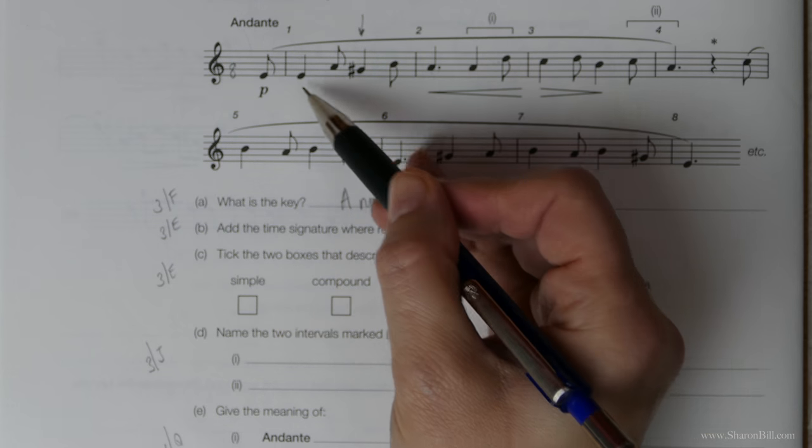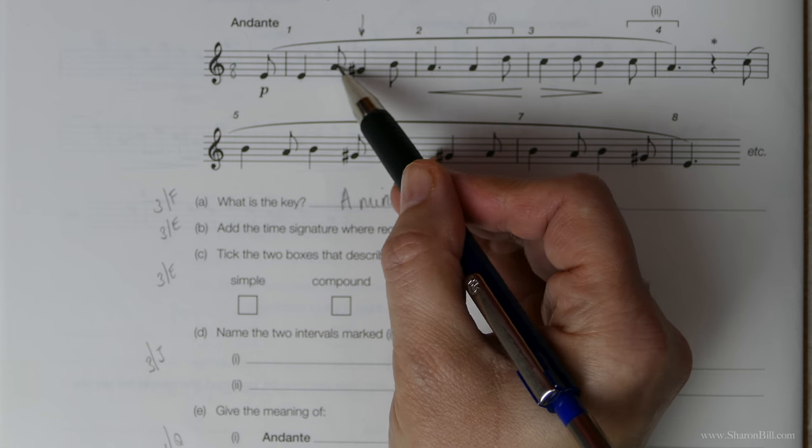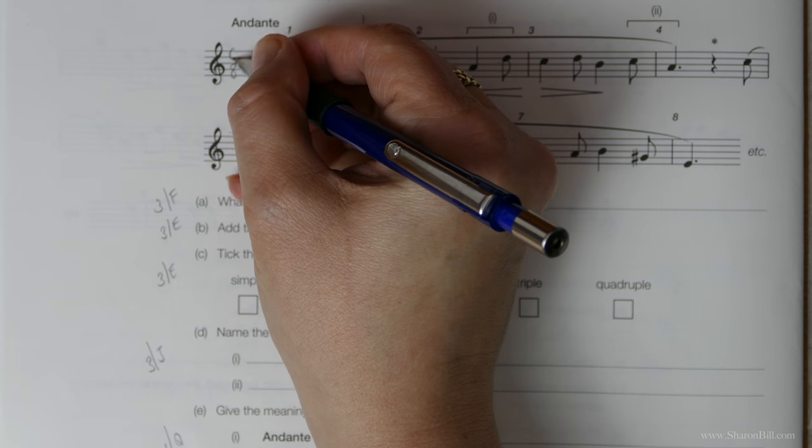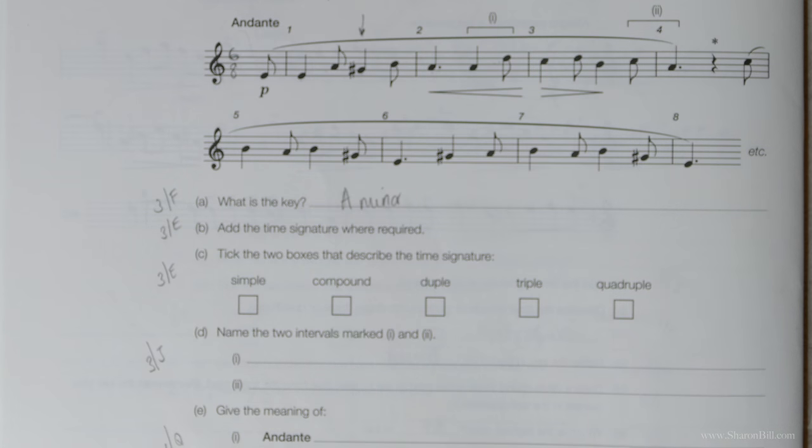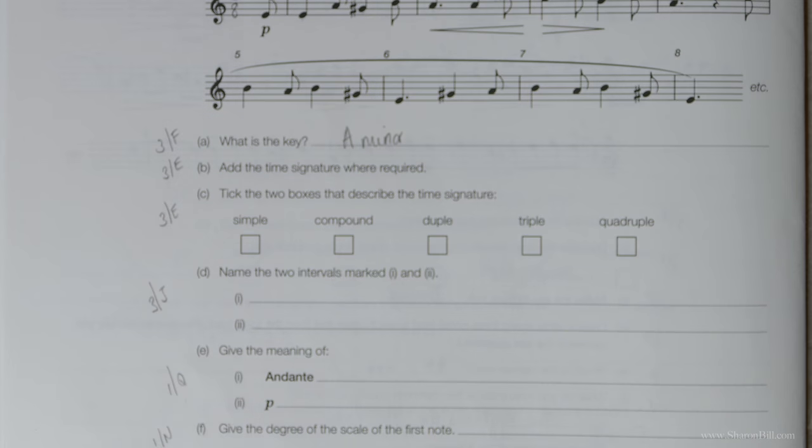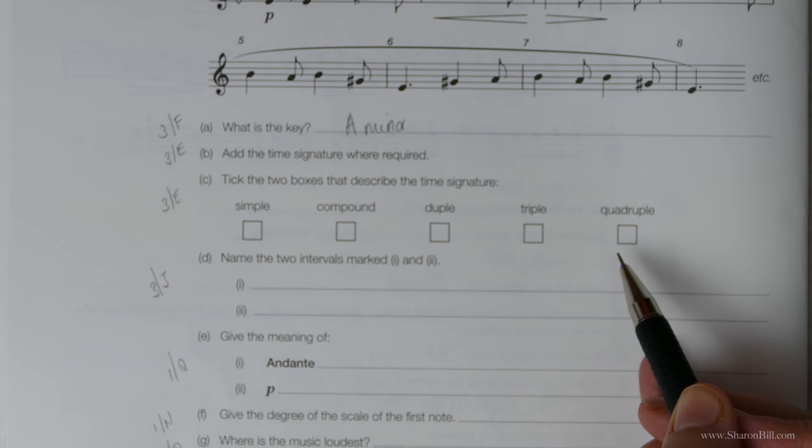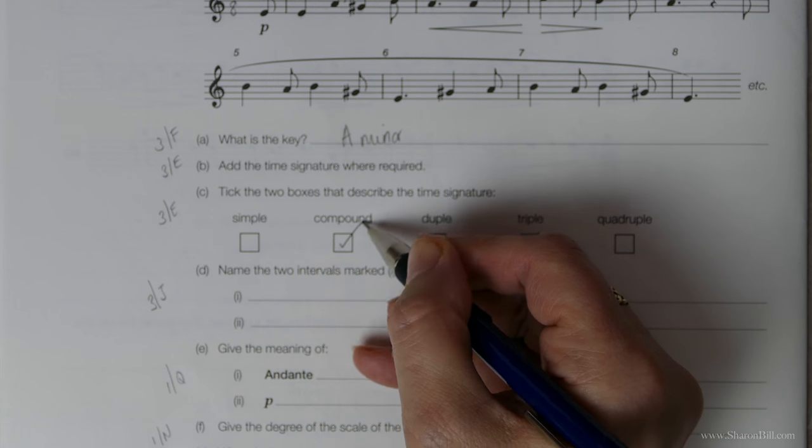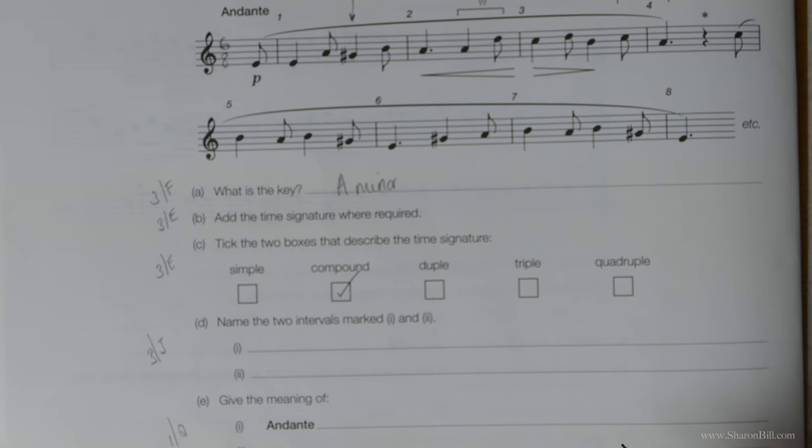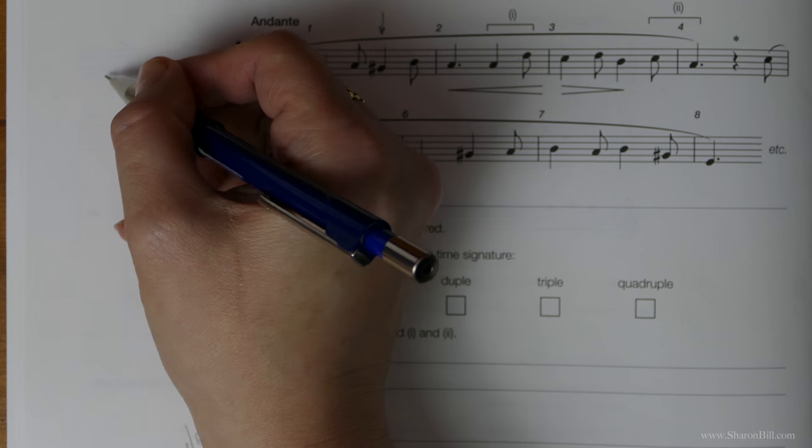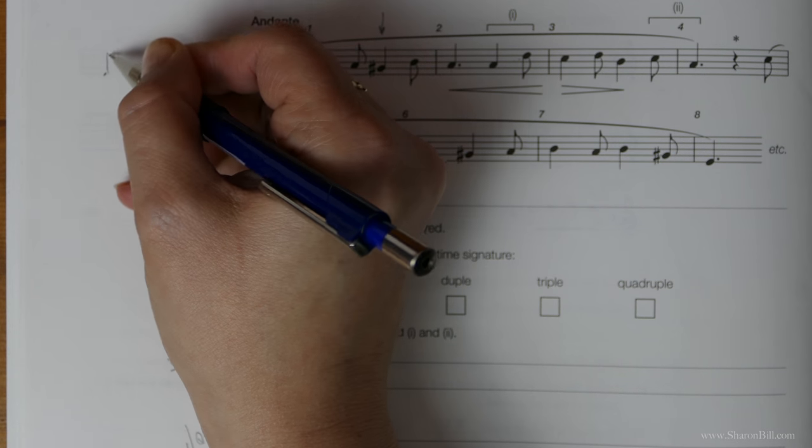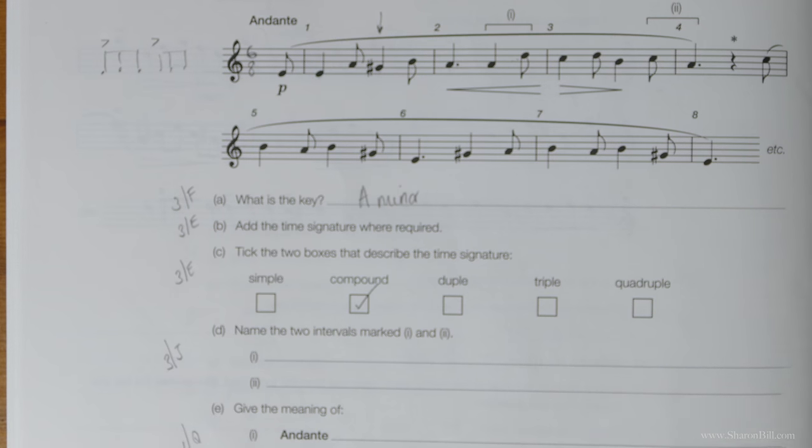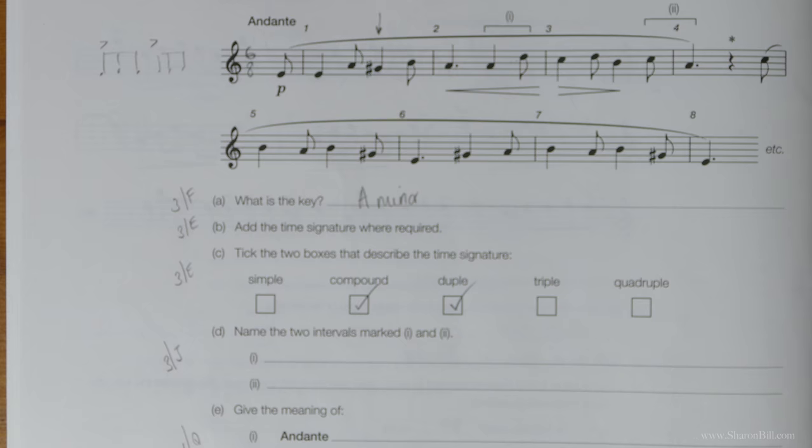So let's just look at this bar here. 1, 2, 3, 4, 5, 6 quaver beats or 6 eighth notes. So that gives us that. So bearing in mind that we've got this right, we can now answer this. And it's in compound time because it's grouped in 3's. And there are 2 groups of 3 in 6 eighth. If you remember 6 eighth is duple time because it's 2 groups of 3.